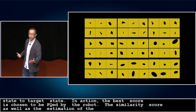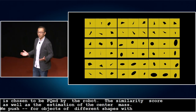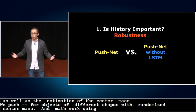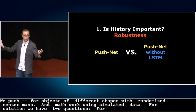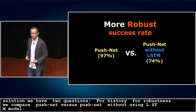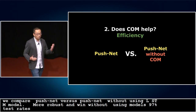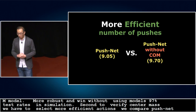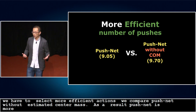The loss function captures both the similarity score loss and the center-of-mass estimation loss. We collect push interaction data in simulation for 60 objects of different shapes with randomized center of mass, training the network entirely on simulated data. For experiments, we ask two questions: first, to verify the importance of history for robustness, we compare PushNet with a version without the LSTM module — PushNet achieves over 97% success rate in simulation. Second, to verify that estimating center of mass helps select more efficient actions, we compare PushNet with and without center-of-mass estimation, and PushNet requires fewer steps to achieve the desired outcome.